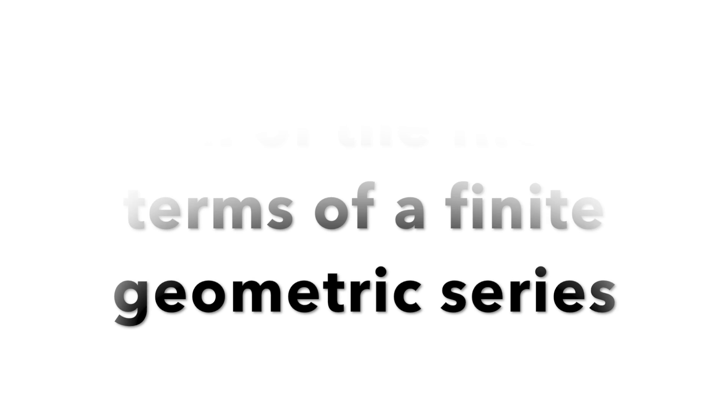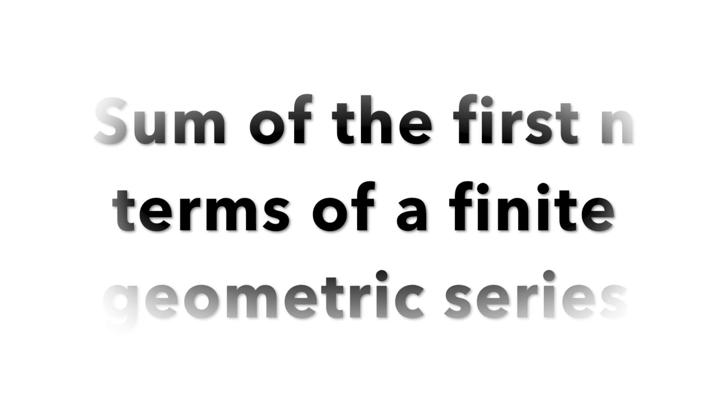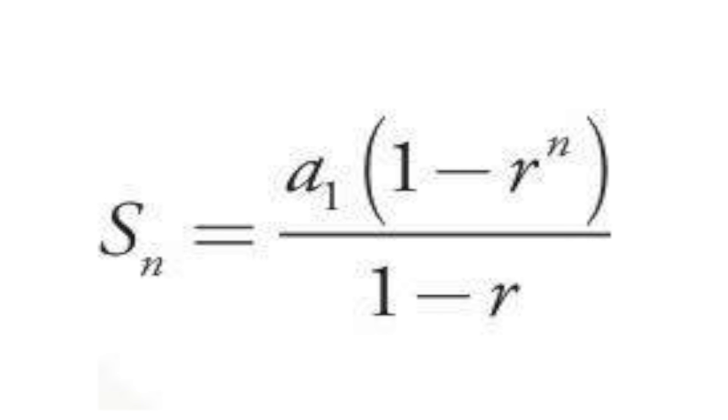Thanks to our early mathematicians, they have discovered a formula for the sum of the first n terms of a finite geometric series. S sub n equals a sub 1 quantity of 1 minus r to the n over 1 minus r. Where S sub n is the sum of the first n terms, a sub 1 the first term, r the common ratio, and n the first n terms.